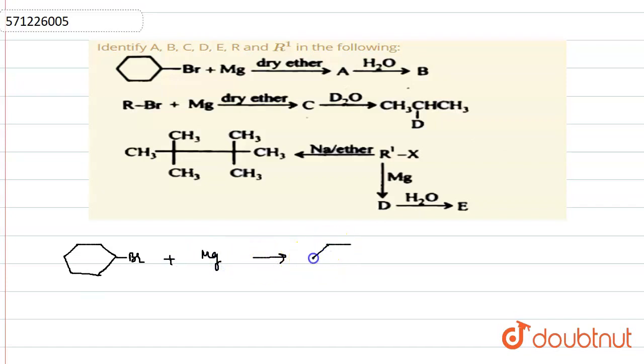So, in the presence of dry ether, formation of Grignard reagent takes place. That's why formation of MgBr occurs. And on this group, after that, water is added. When water is added into that group, then,